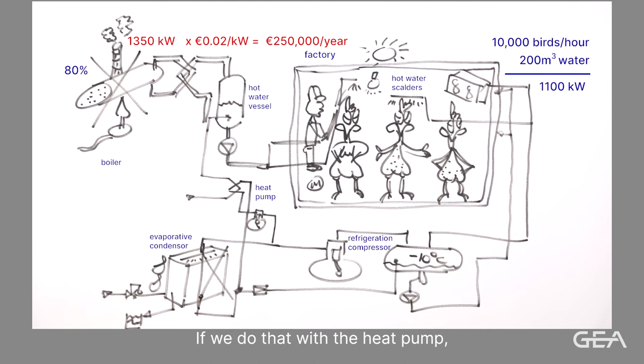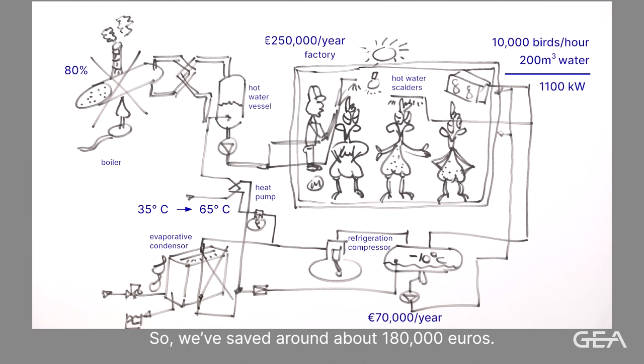If we do that with the heat pump, just simply boosting the proportion from 35 to 65 means we use around about 80 kilowatts worth of electricity instead. 80 kilowatts at around about 10 cents per kilowatt hour works out to about 70,000 euros per year. So we've saved around about 180,000 euros.